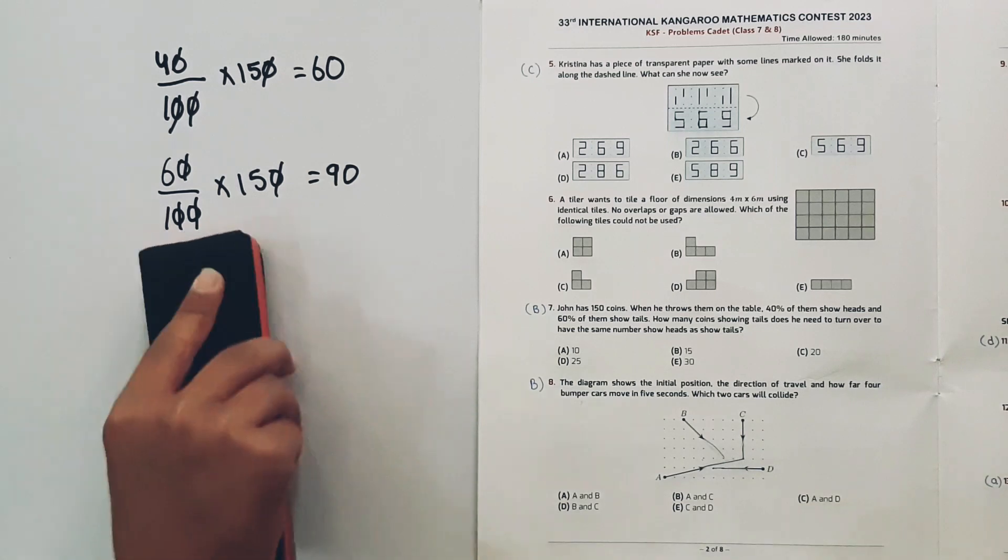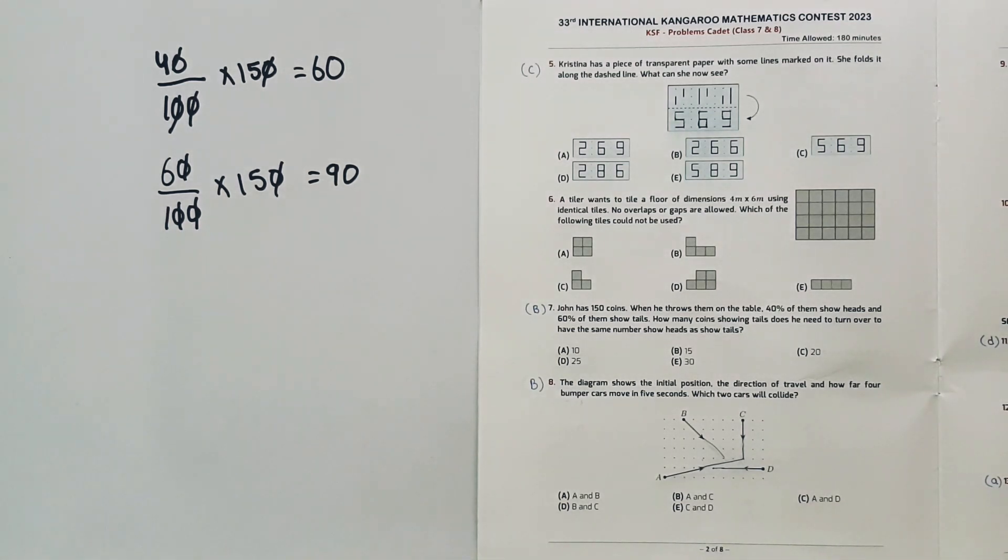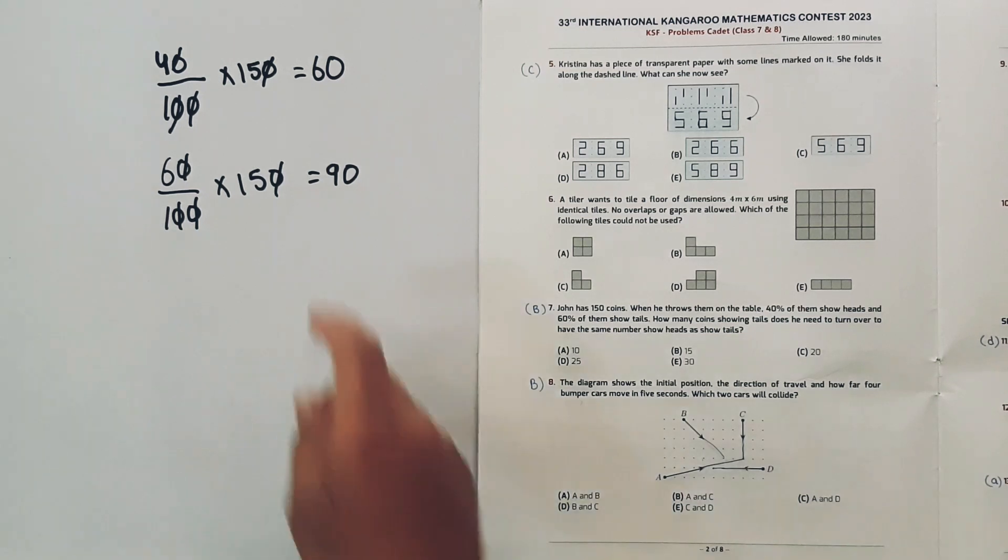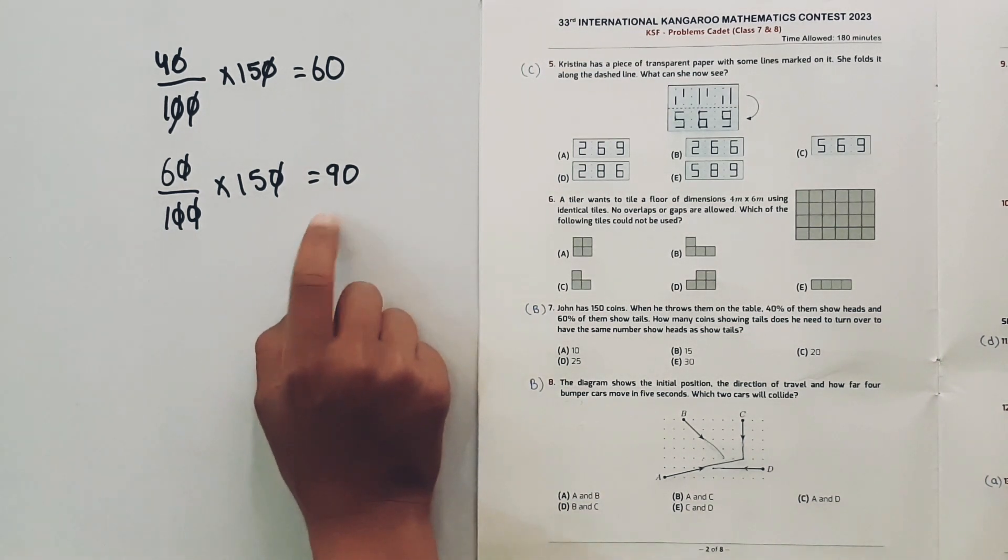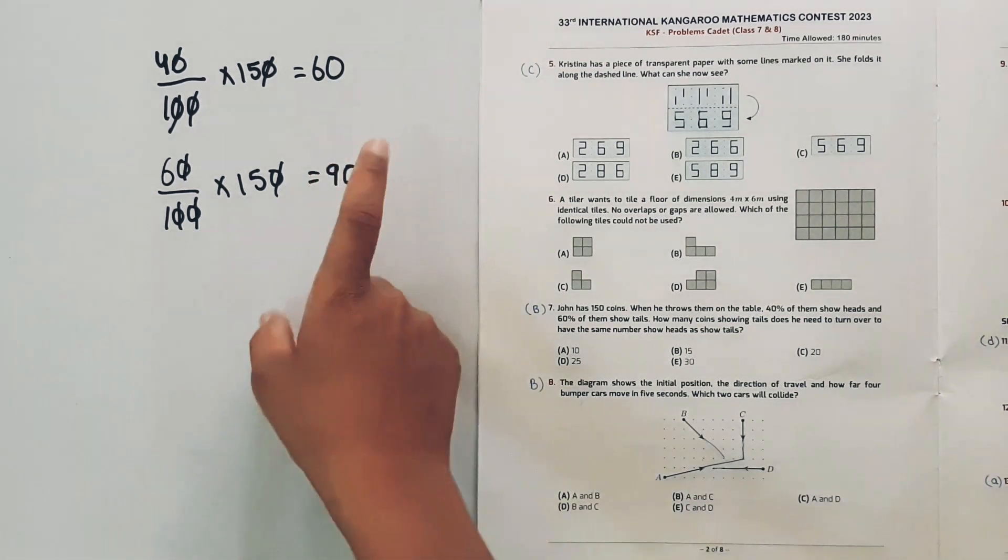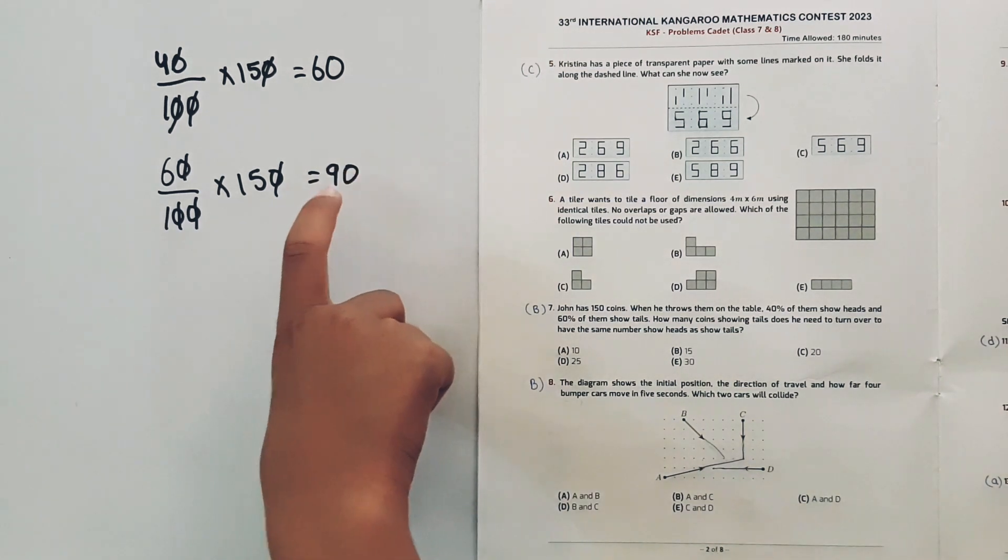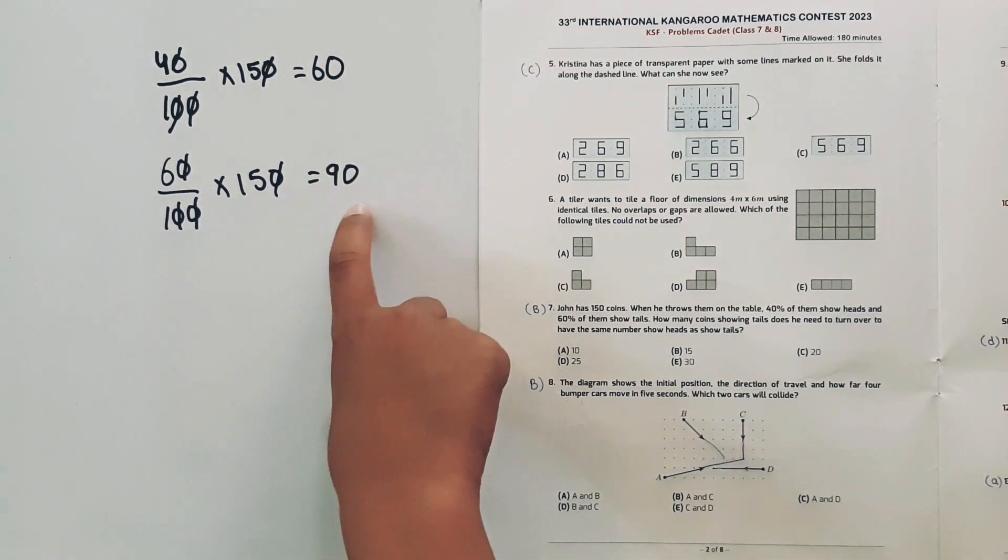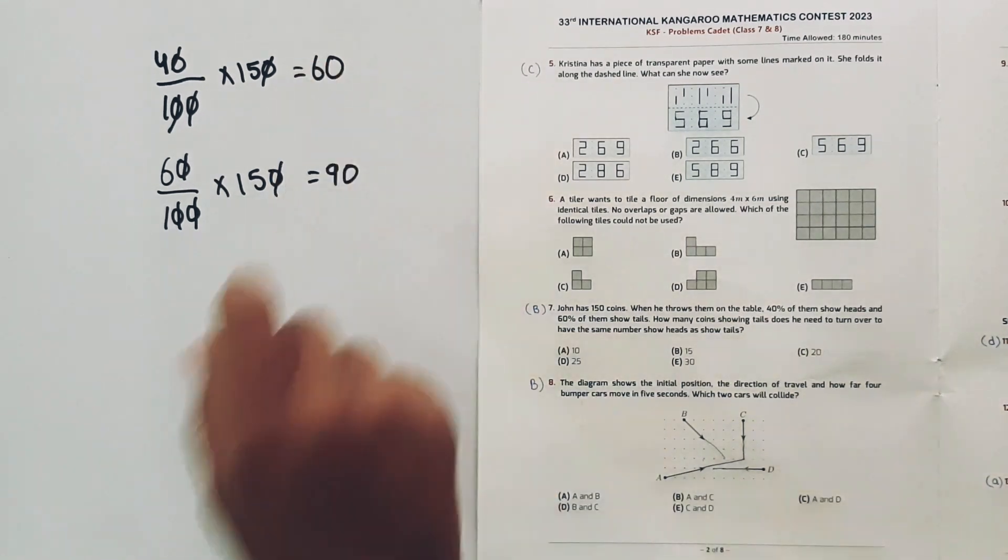Now we will find how many coins he needs to turn over to have the same number of heads as tails. If we turn over 15 coins, we have 60 heads and 90 tails.